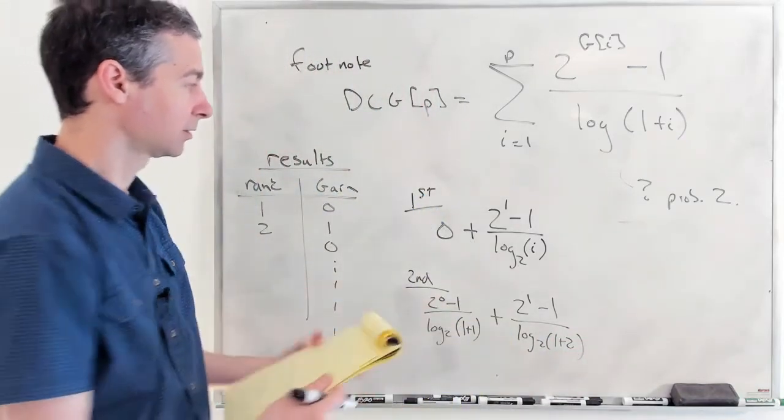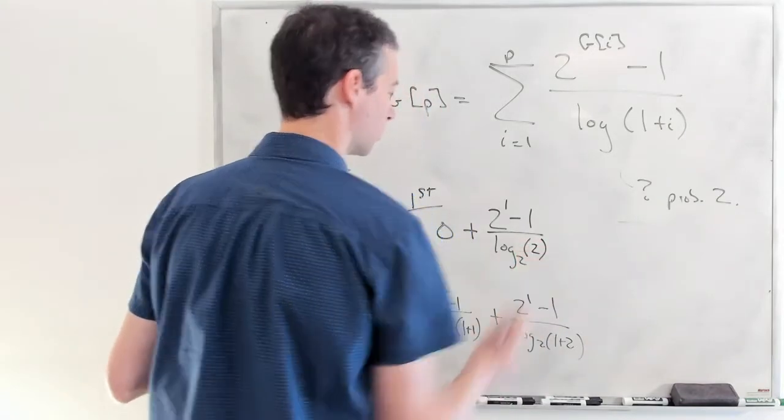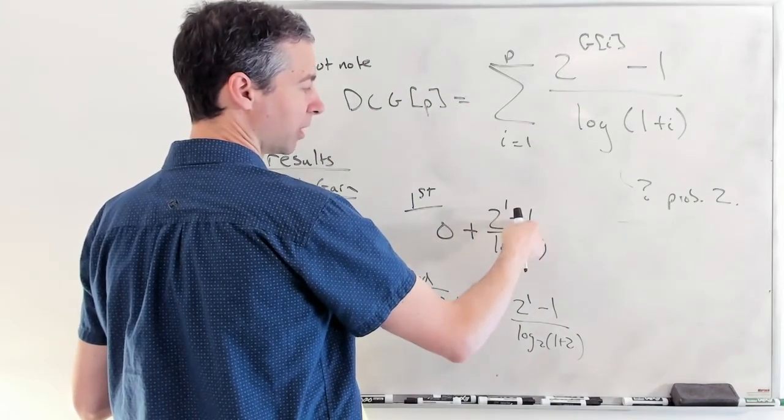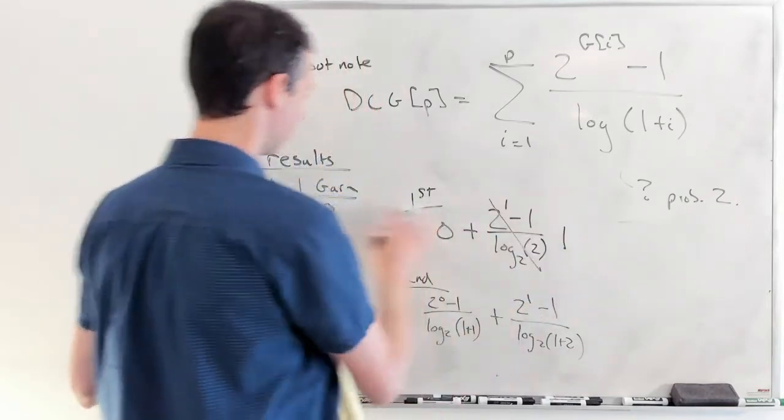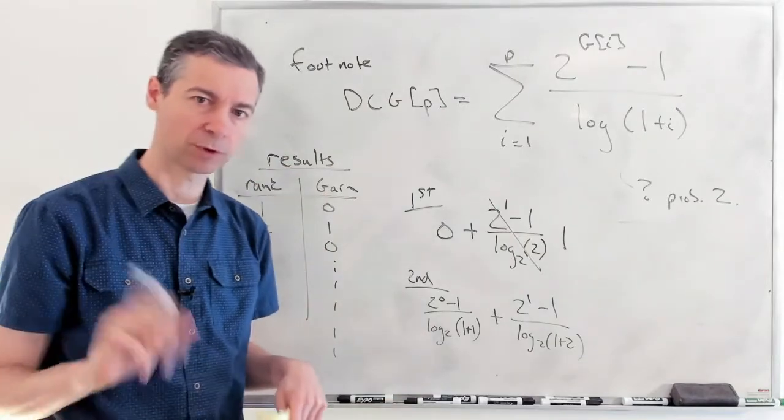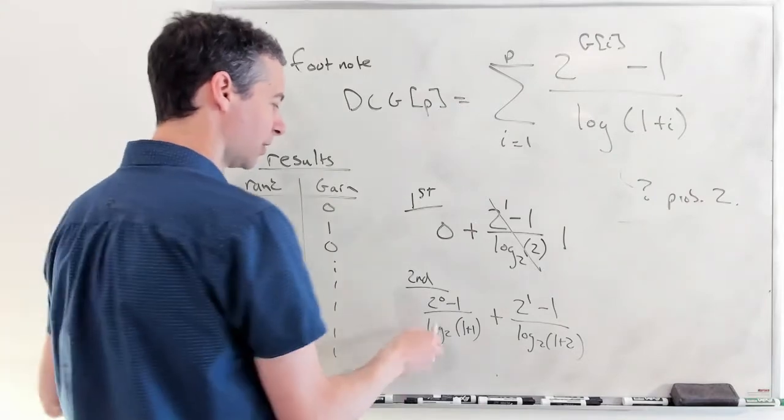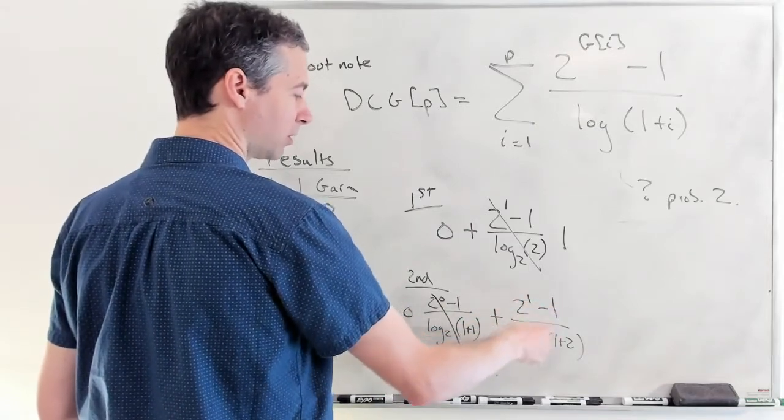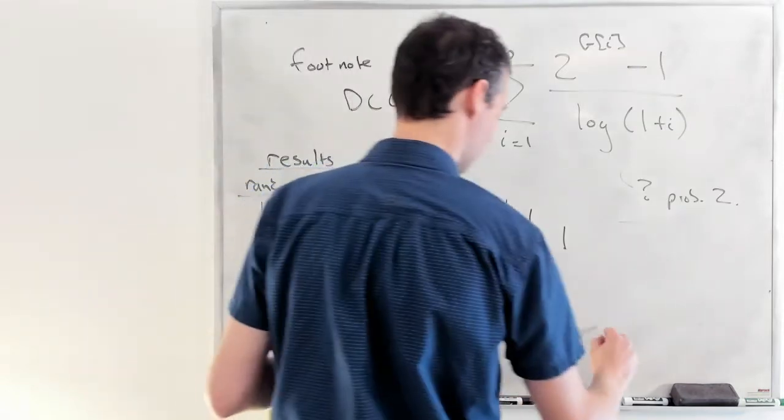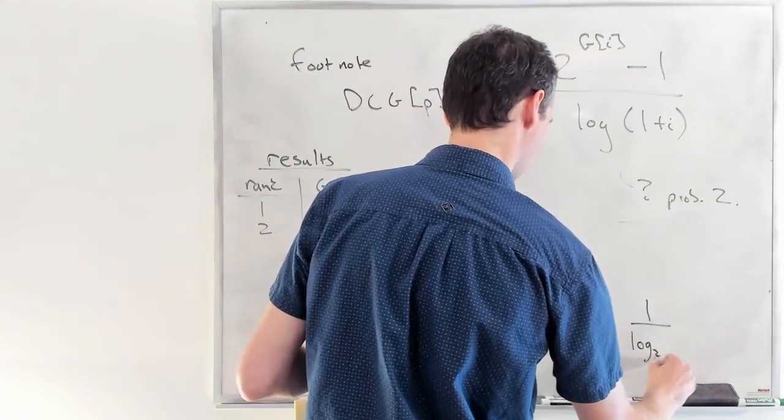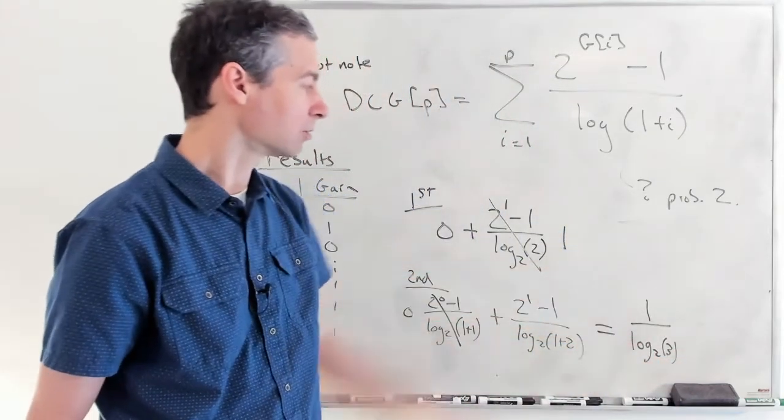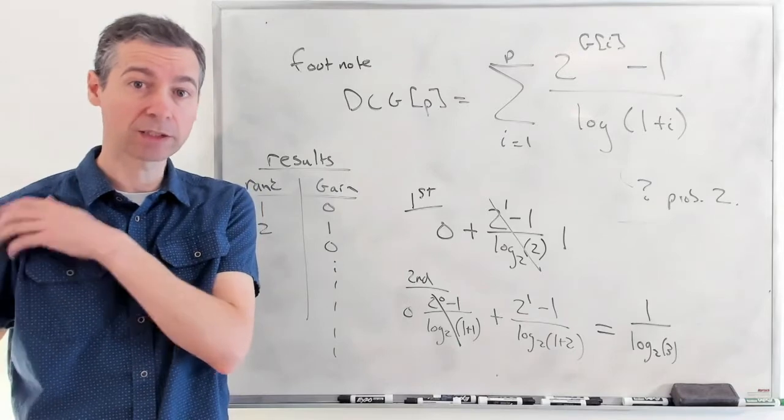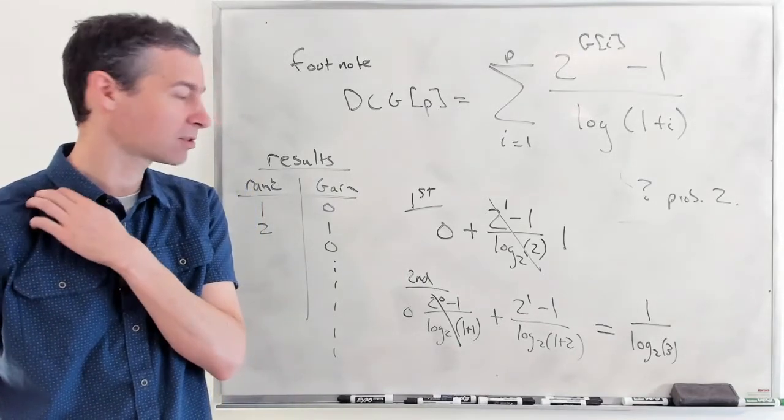So this guy, log base 2 of 2 is 1. This is 2 to the 1, that's 2 minus 1, that's 1. So all of this turns into 1. So this first formulation, which is the main formula in the Croft textbook, gives you a gain of 1. This formulation, that's 1 minus 1, so that becomes 0. This one, 2 to the 1 is 2, that's 1, divided by log base 2 of 3. So this all equals 1 over log 2 of 3, which is not equal to 1. So their footnote saying that it's exactly the same for binary relevance is unfortunately easily shown not to be the case, so don't get confused by that.